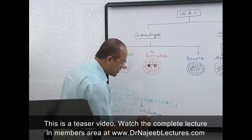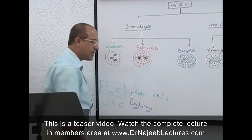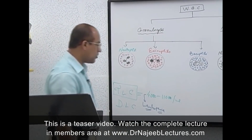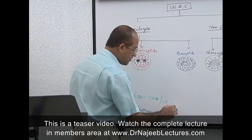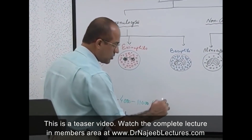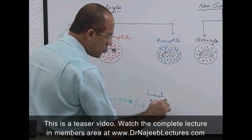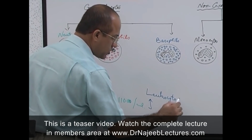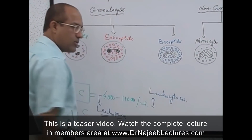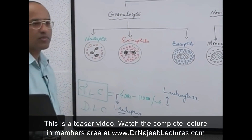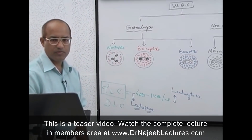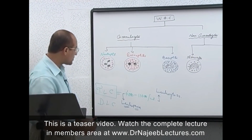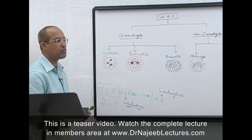When white blood cells are less than 4,000, the condition is called leukopenia — 'penia' means less, 'leuko' means white cells. When white blood cells per milliliter are more than 11,000, the condition is called leukocytosis.